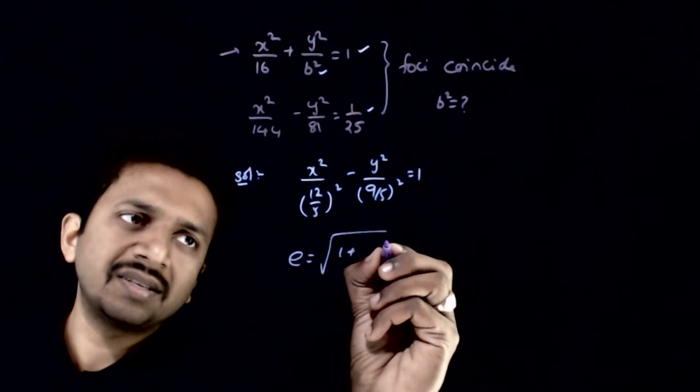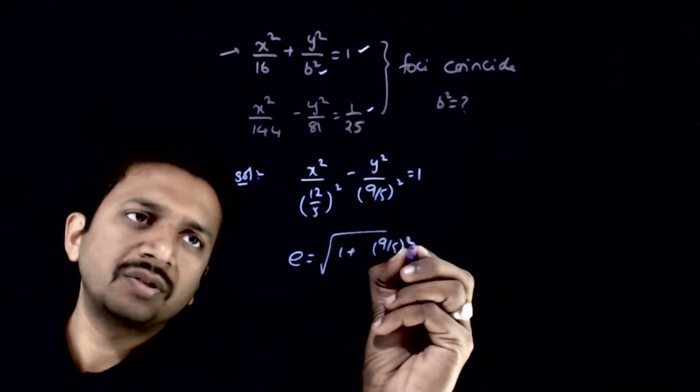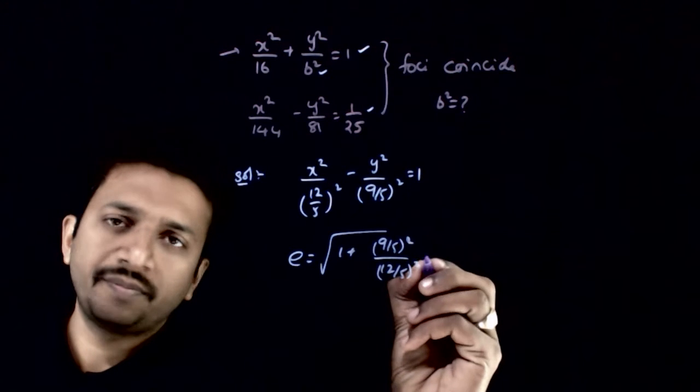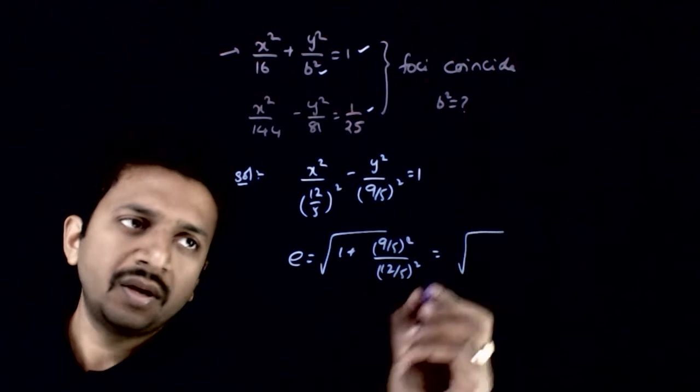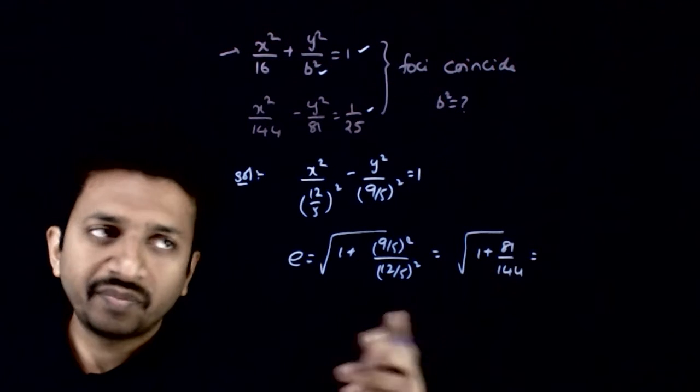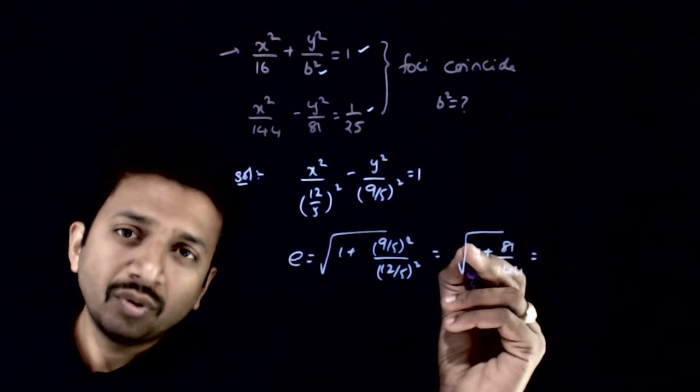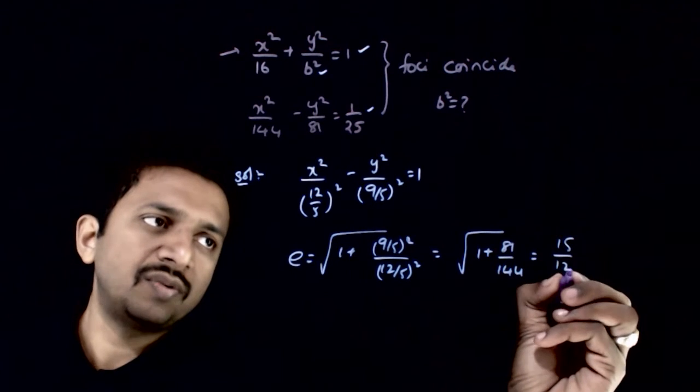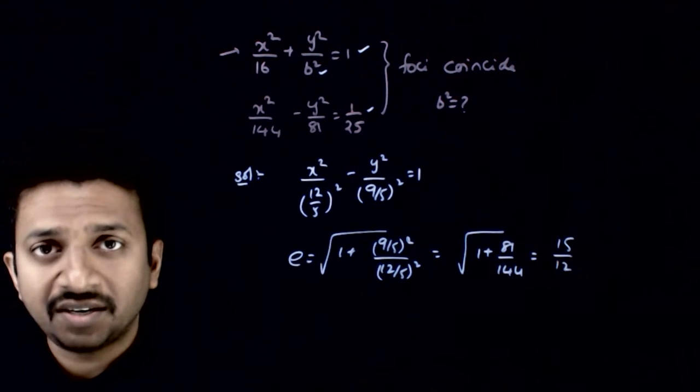Root of 1 plus (9/5)² over (12/5)². That equals root of 1 plus 81/144. If you take the LCM, you get root of 225/144, which is 15/12. This is the eccentricity.